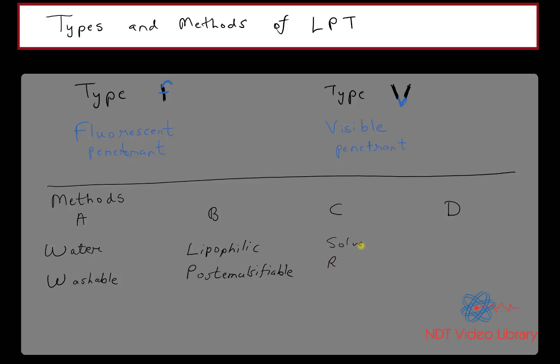Method C is solvent removable and Method D is hydrophilic post emulsifiable. Lipophilic - Method B - lipo is oil, and hydro is obviously water, and philic stands for love. So Method B is oil-based post emulsifier and Method D is water-based post emulsifier.